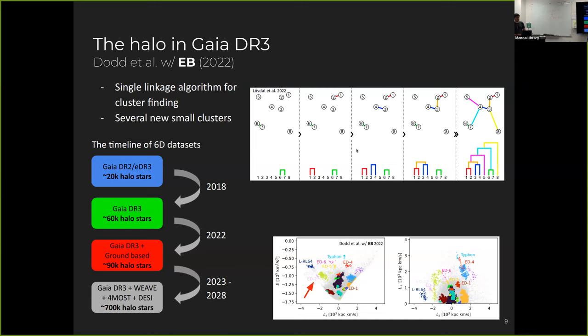So by combining Gaia with several ground-based surveys, such as SDSS, APOGEE, RAVE, LAMOST, several others that you may be familiar with, from 2018, when the first useful Gaia data release came for this type of study, we had only 20,000 halo stars that we could use this integral of motion for.